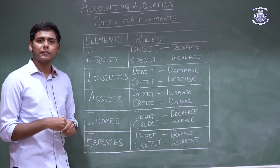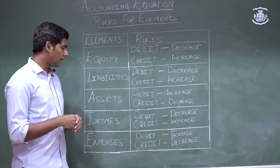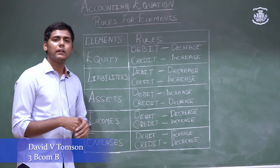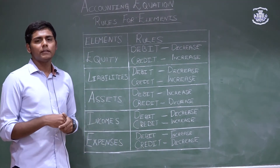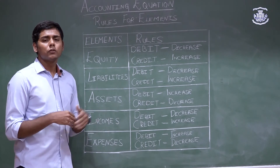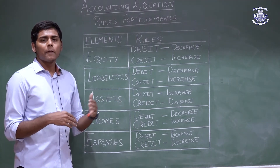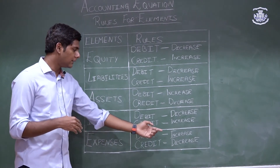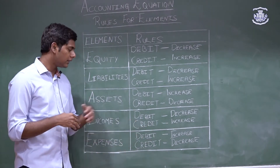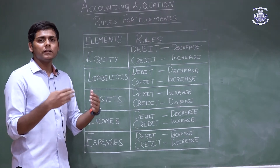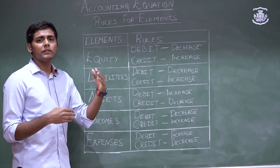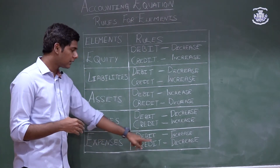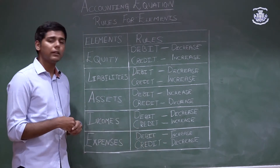Finally, for expenses, the rule is debit when it increases and credit when it decreases. The most common example is purchases: whenever we purchase goods, the value of the expense increases, so we record purchases as a debit entry. Whereas for purchase returns, when goods are returned, the value of purchases decreases, so we record purchase returns as a credit entry.